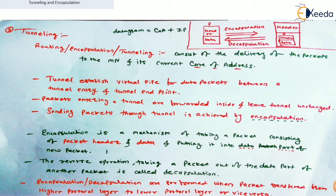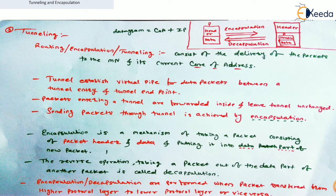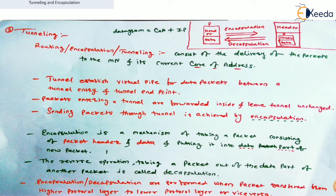A tunnel is a virtual pipe — not a physical medium between the home network and foreign network. It acts as a pipe between the tunnel entry and tunnel endpoint. The tunnel entry is at the home agent and the tunnel end is at the foreign agent. Packets entering a tunnel are forwarded inside and leave the tunnel unchanged.